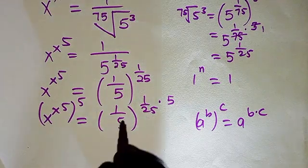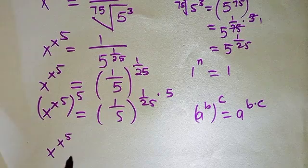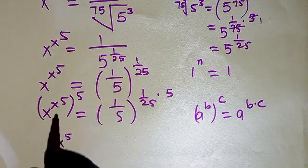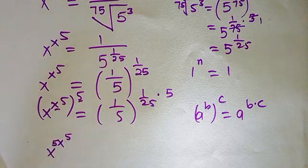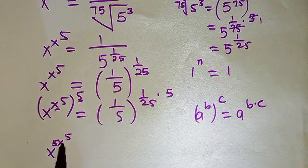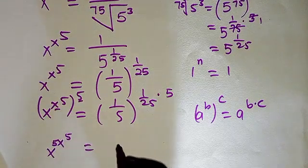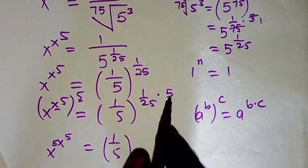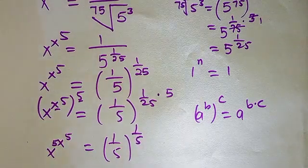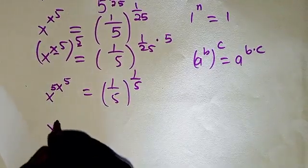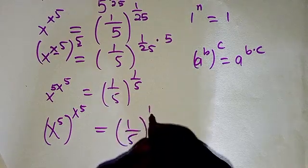Applying that law here, the left side becomes x to the power 5 raised to the power x to the power 5, and on the right side 1 over 5 raised to the power 1 over 25 times 5 gives 1 over 5 raised to the power 1 over 5. So we now have: x to the power 5, all raised to x to the power 5, equals 1 over 5 raised to the power 1 over 5.